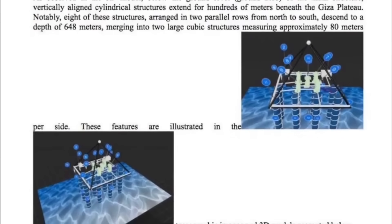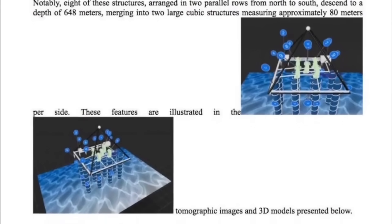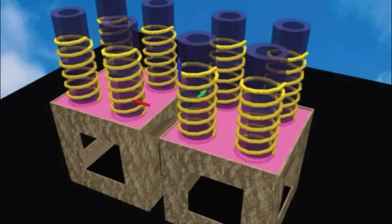as observed in the 3D model below the ground level, so ground zero of the main structure, vertically aligned cylindrical structures extend for hundreds of meters beneath the Giza plateau.